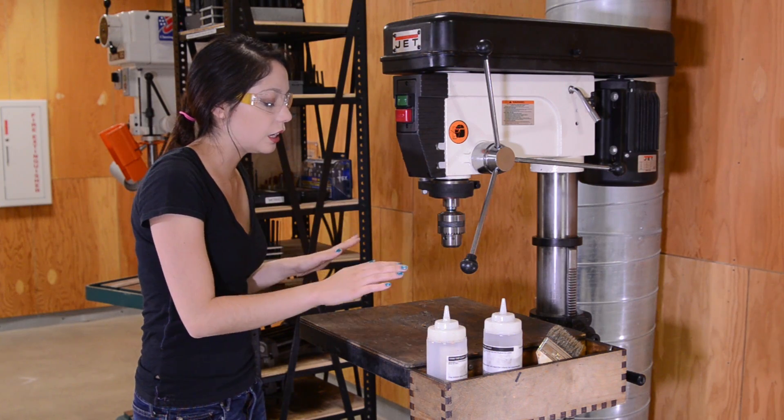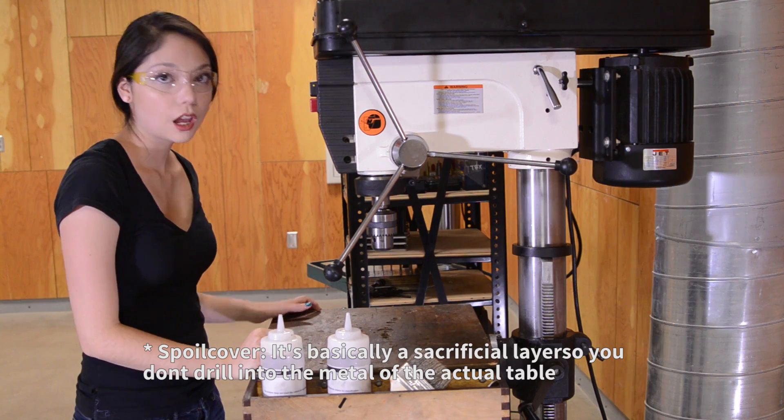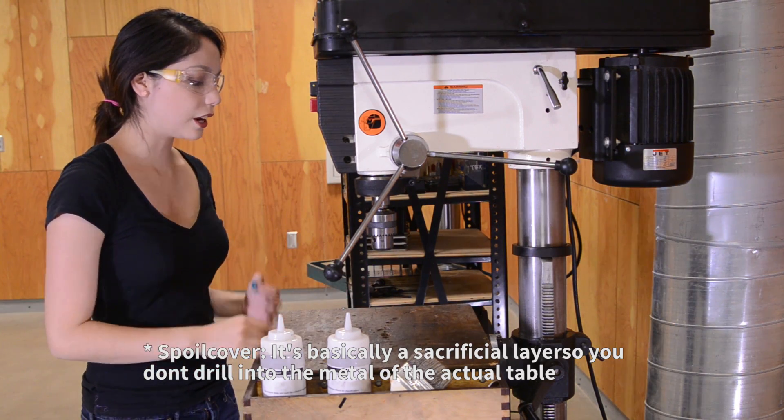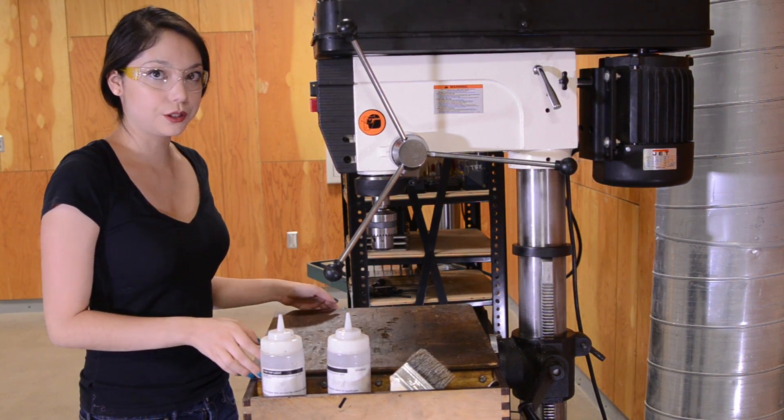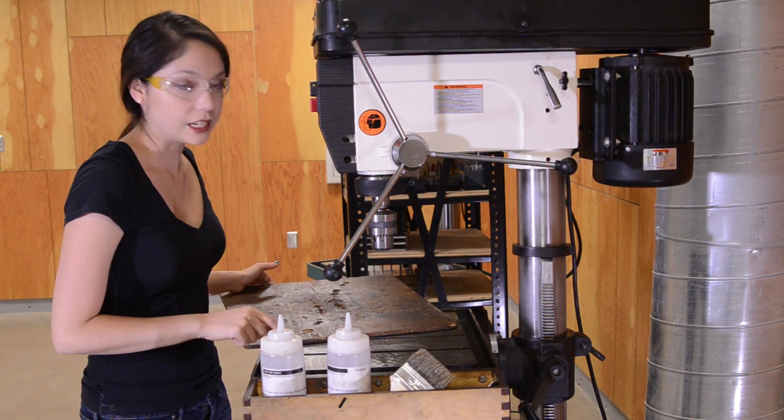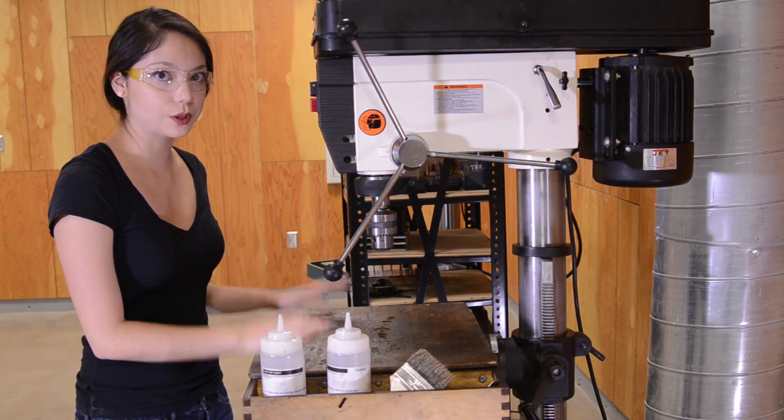And then this is the spoil cover, or spoil block. So if you're using a vice that's just being placed, or a clamp just being placed here, and you're not using the T-slot hardware, then you're going to want to keep this piece of protection wood, the spoil layer.